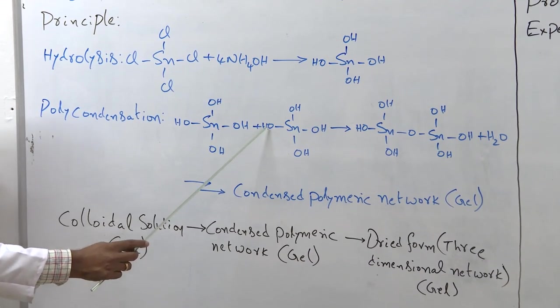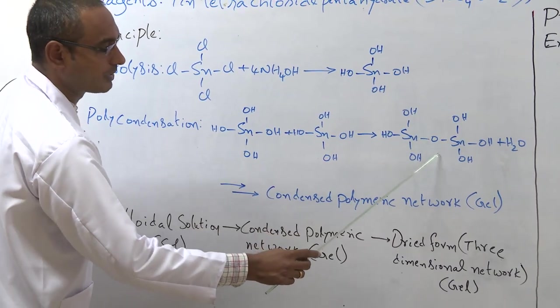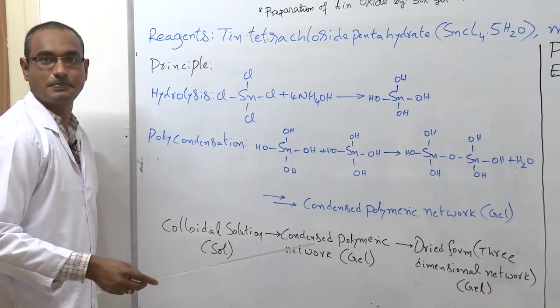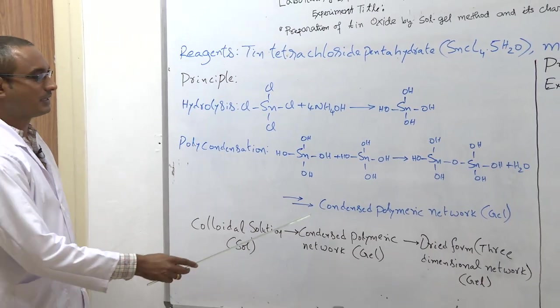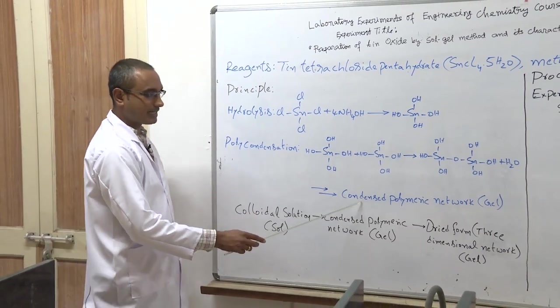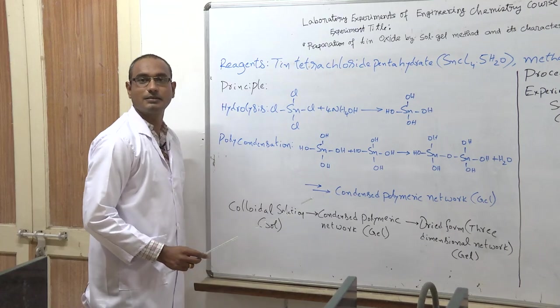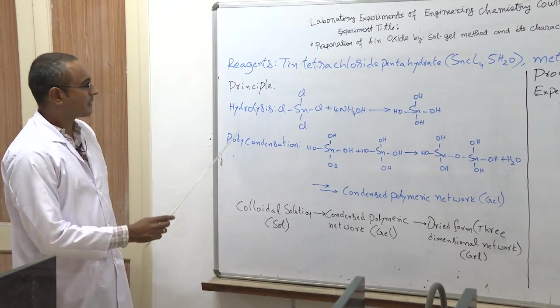And this tin tetrahydroxide will undergo condensation followed by polycondensation into condensed polymeric network. How this reaction is going to happen? And this hydroxy group will react and eliminates the water molecule and form this O-linkage. And this reaction keeps going on and forms a condensed polymeric network.